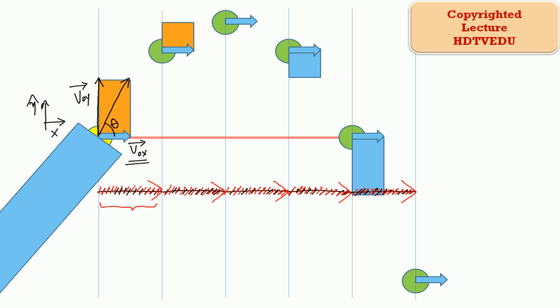That is not the case along the vertical. The vertical velocity is going to be affected by acceleration due to gravity pointing down. Let's call the trajectory points A, B, C, D, E, and F. At point A, the y component of the velocity vector points vertically up along positive y, but acceleration due to gravity points vertically down.